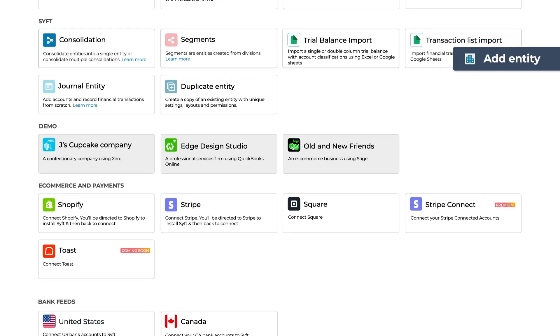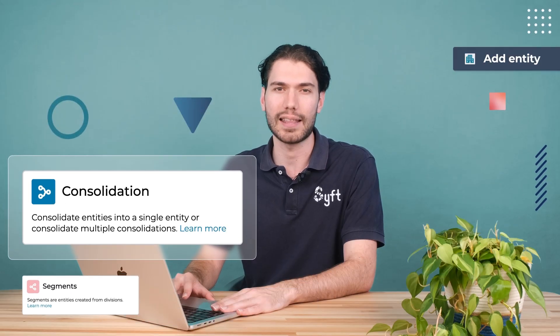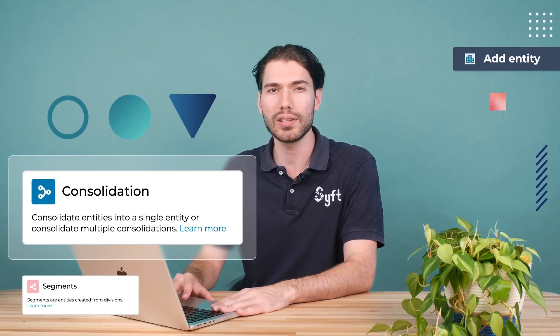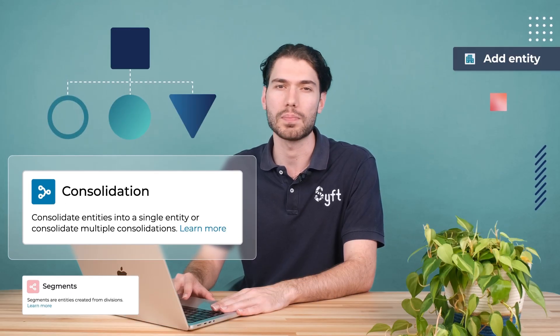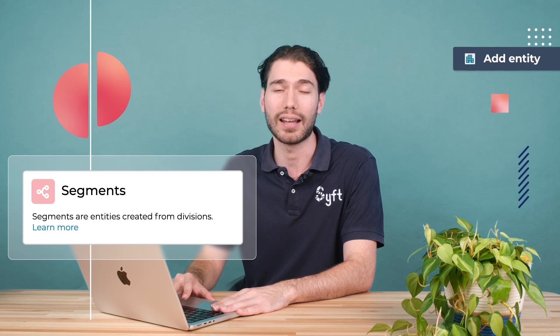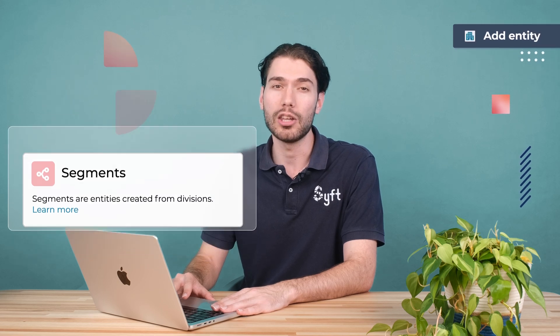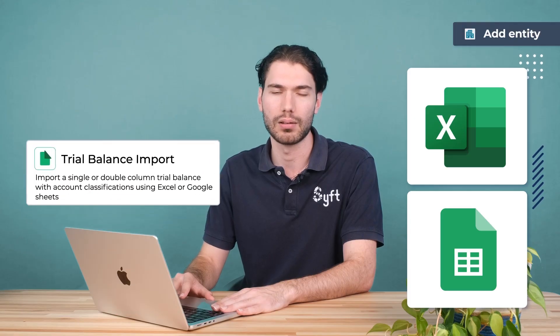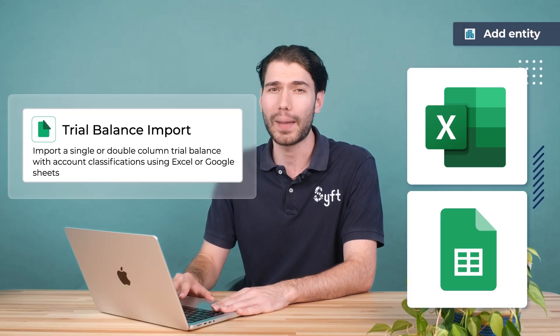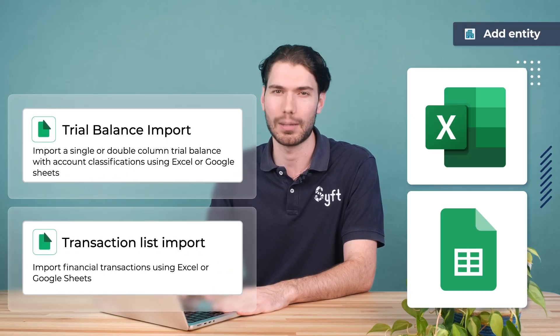Once those entities are on SIFT, you can consolidate them into reporting groups across multiple currencies or segment them into their constituent divisions. You can also import data into SIFT from Excel or Google Sheets, whether it's trial balance data or transaction list imports.